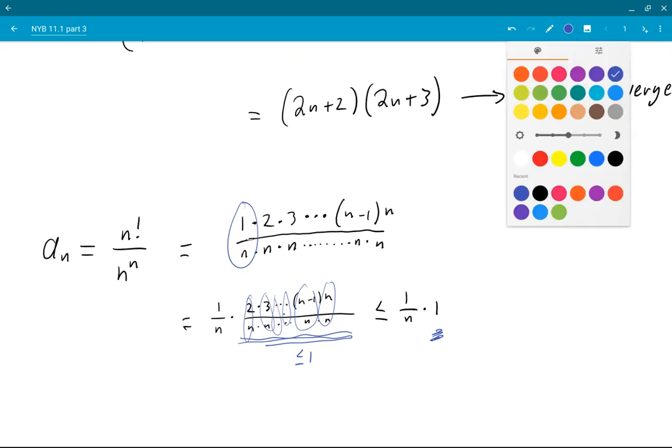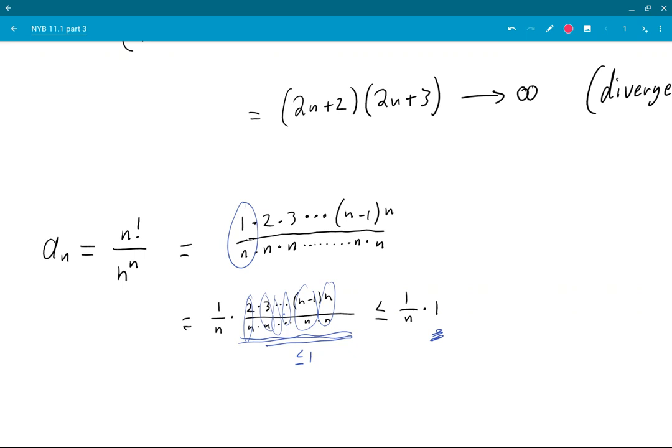Okay, maybe one more time. If you take 1 over n, and you multiply it by something that's less than 1, then that must be less than or equal to just 1 over n.